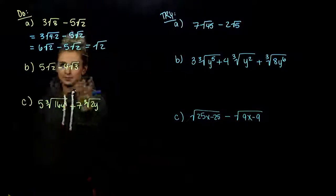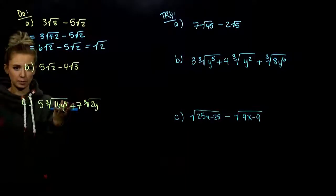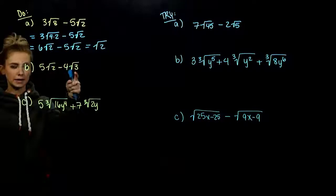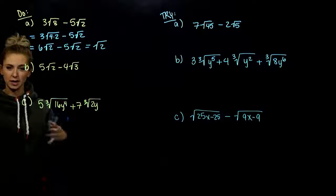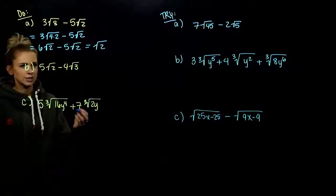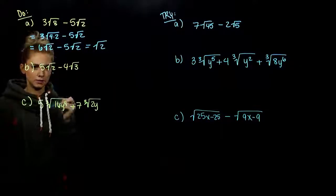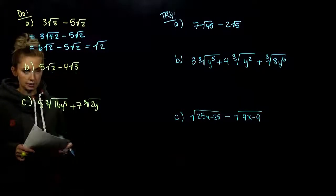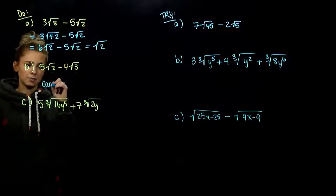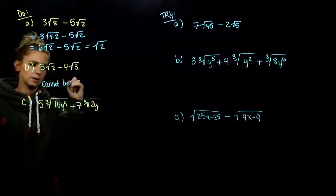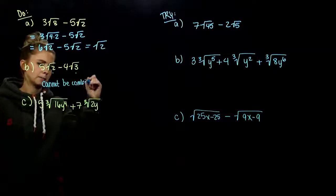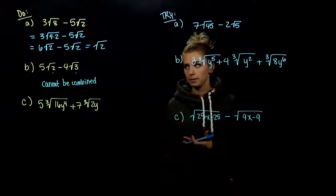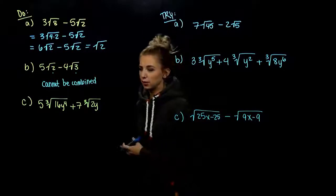In Part B, sometimes we can't manipulate them. We do have the same index, but the radicands are prime numbers — we can't break them down any farther. There's no perfect square to take out of 2 or 3 to make those match exactly. So sometimes they just cannot be combined, especially when radicands are prime numbers.